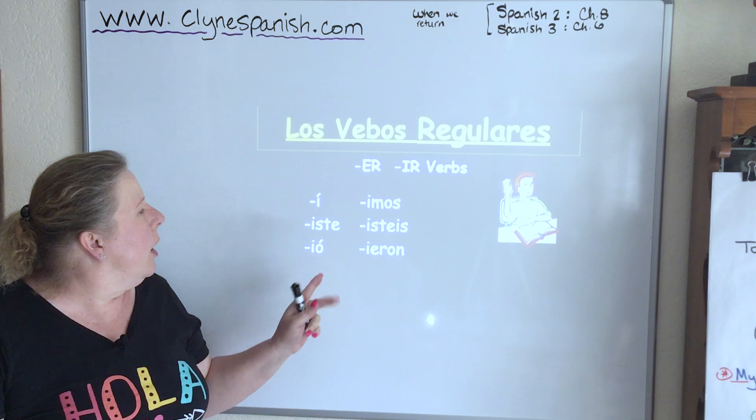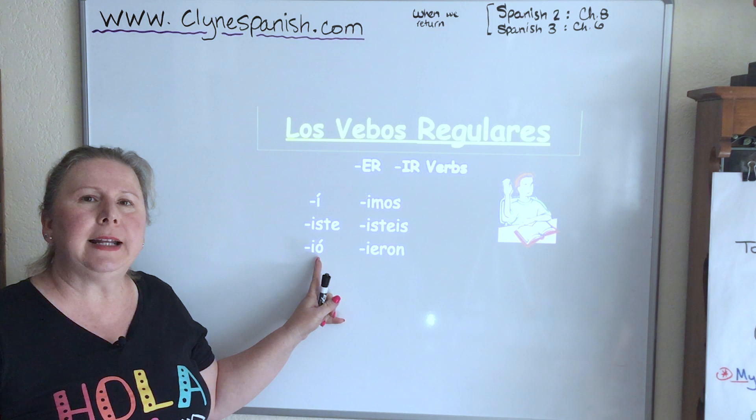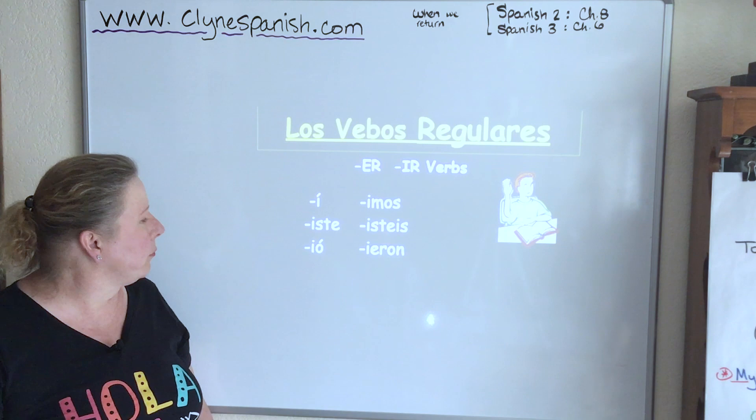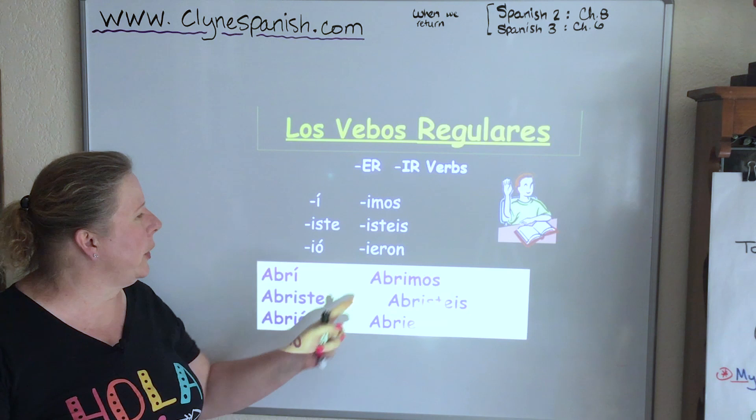Also be very, very careful. One of the most common errors when writing ER and IR verbs in the preterite tense is people seem to like to put the accent mark on the I. It's actually on the O in the él/usted form. An example — the verb ABRIR, to open: abrí, abriste, abrió, abrimos, abristeis, and abrieron.